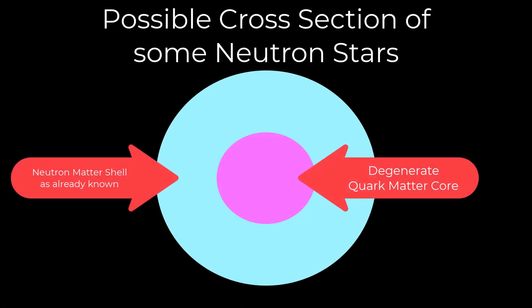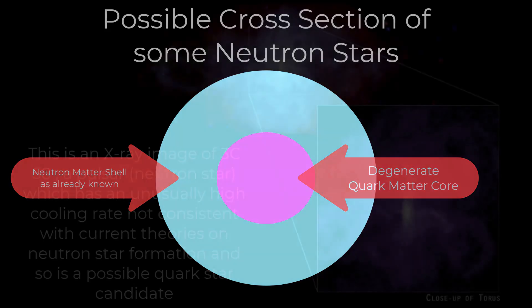Although, there is still hope. It's possible that quark stars are similar to neutron stars in the way that they still have neutron material but a degenerate quark matter core. This would make them look like neutron stars on the outside, but be hiding quark matter within.